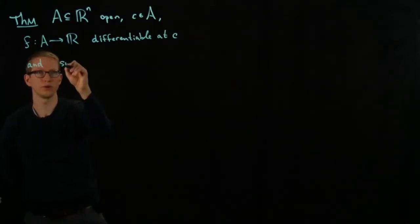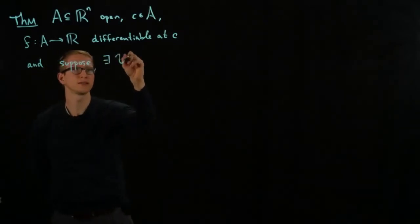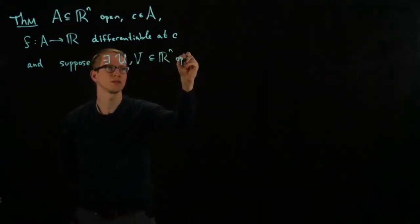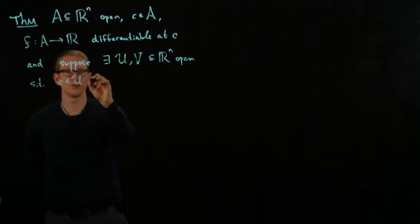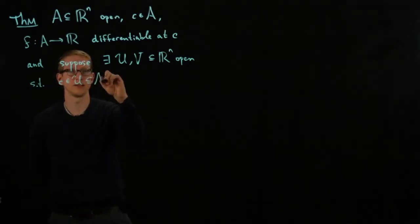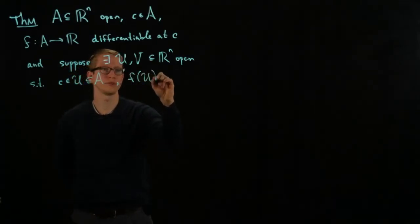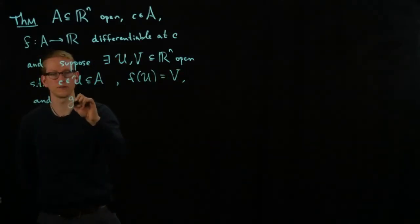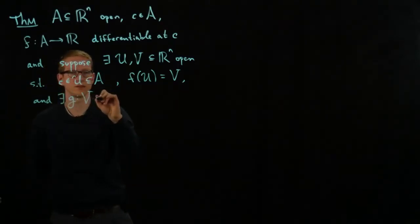And suppose there exist open sets U and V such that C is contained in U, is a subset of A, and F of U equals V, and there exists an inverse function G from V to R^n.